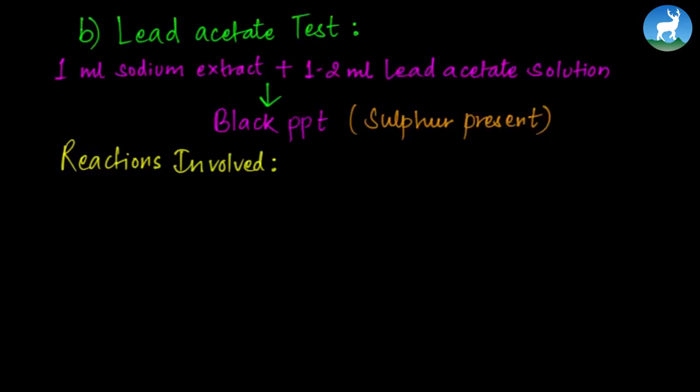The second test for sulfur detection is the lead acetate test. Take 1 mL sodium extract solution and add 1-2 mL of lead acetate solution. Black precipitate will form, indicating sulfur presence.